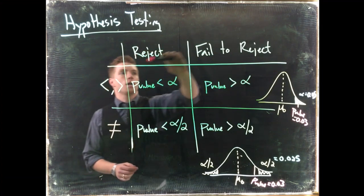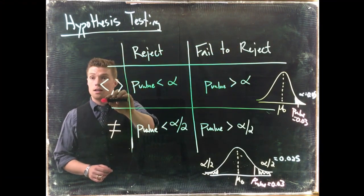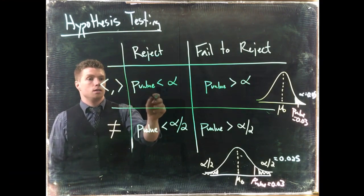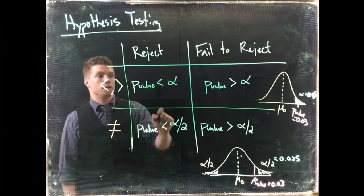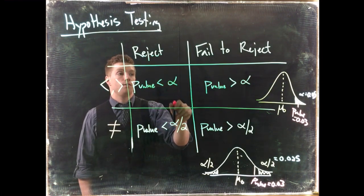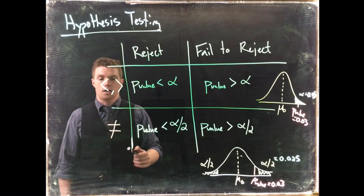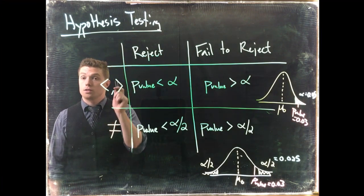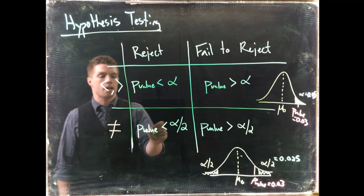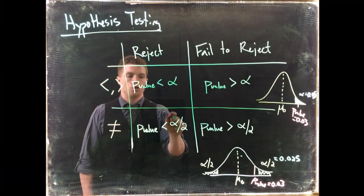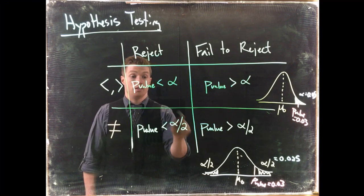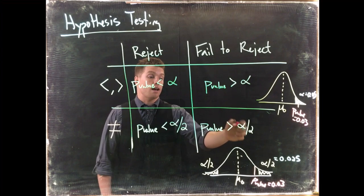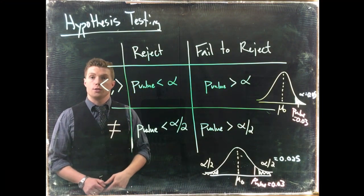We need to remember this: when we are figuring out whether we're rejecting or failing to reject, if we say less than or greater than in our alternative hypothesis, we are going to be comparing p-value to alpha. If the p-value is less than alpha, we reject. However, if we're talking about not equal to, then we need to compare the p-value to alpha divided by 2. If it's less than alpha divided by 2, we still reject, but if the p-value is greater than alpha divided by 2, we fail to reject the null hypothesis.